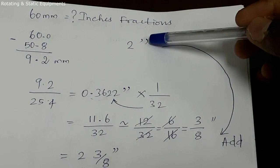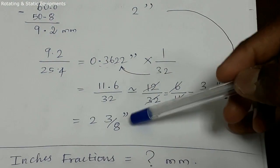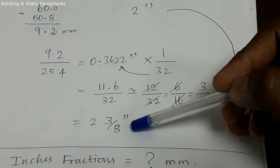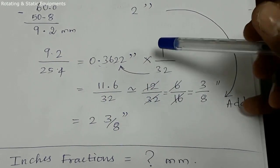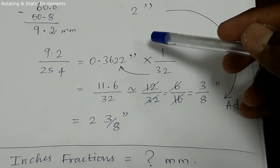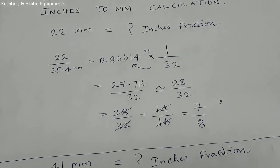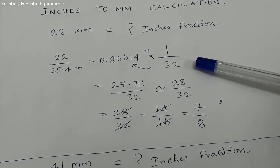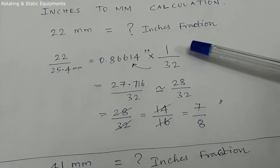If we add 2 inch plus 3 eighths, the answer is 2 3/8 inches. Now if you want more precision, you can calculate using 1 divided by 32, 1 divided by 16, 1 divided by 64, or 1 divided by 128.